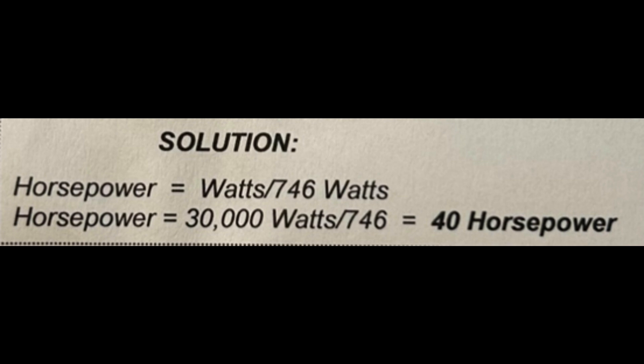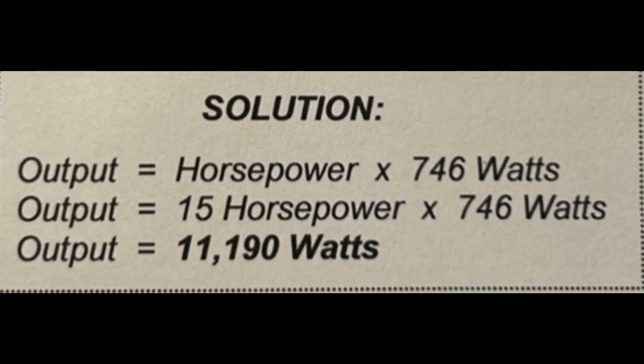Question 59. What are the output watts of a 15hp motor? 11kW. Motor hp-to-kW ratio: one hp motor produces 0.75kW. The output watts of a 15hp motor is 11kW.